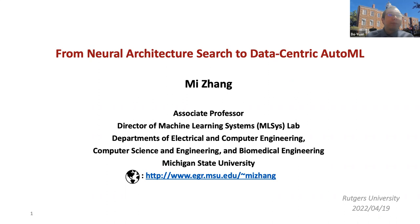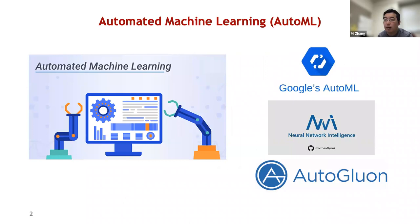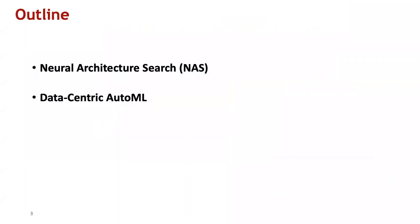Thanks so much for the very nice introduction and for inviting me. My talk today is titled 'From Neural Architecture Search to Data-Centric AutoML.' In recent years, automated machine learning, or AutoML, has attracted significant attention due to its capability of automating the design of important components of machine learning systems. In this talk I want to discuss our recent works in this area.